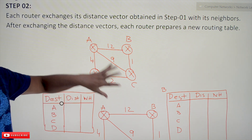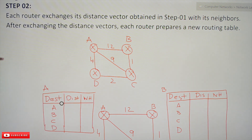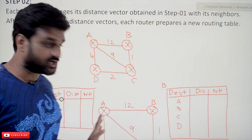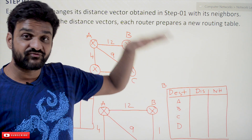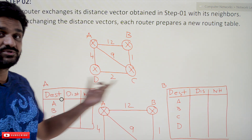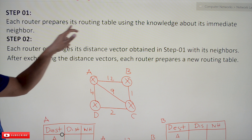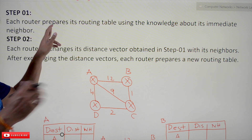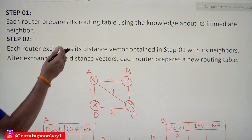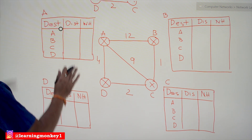These are the two steps involved in creating a stable routing table. In this class we will try to generate the routing tables using the first step. In the next class we will try to generate the distance vector routing tables using the second step. The first step states that each router prepares its routing table using the knowledge about its immediate neighbors.